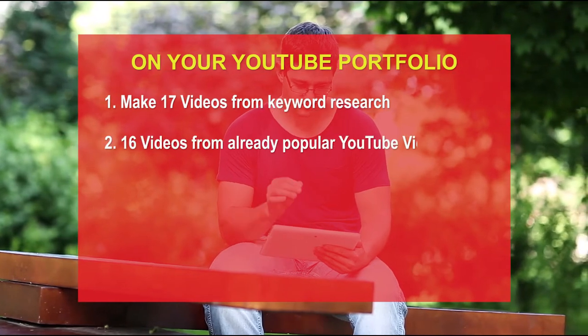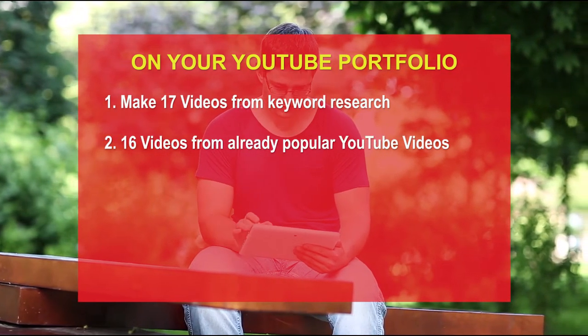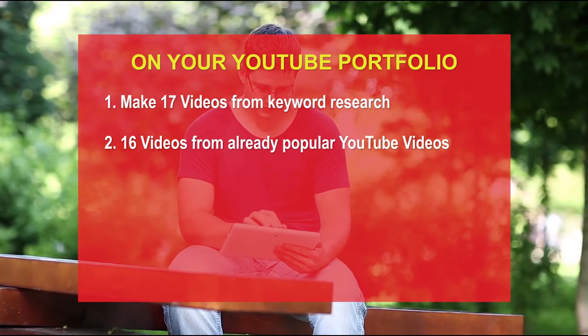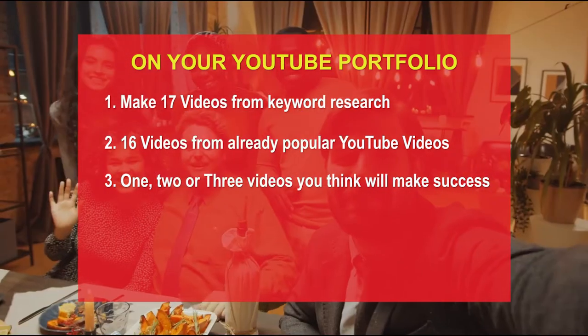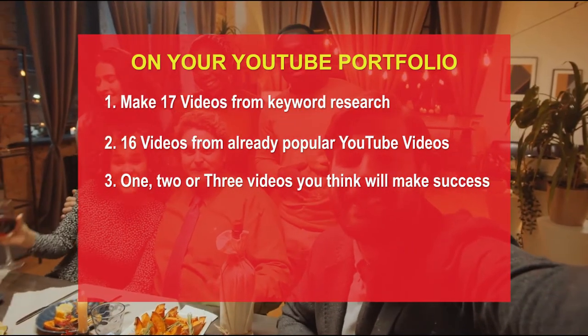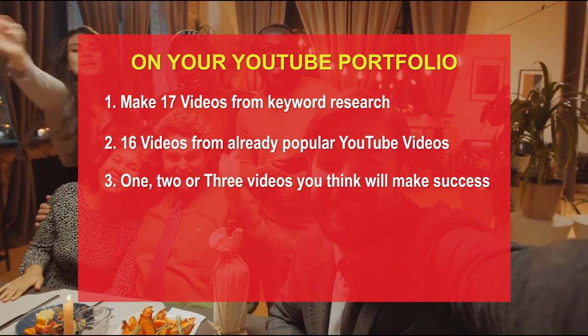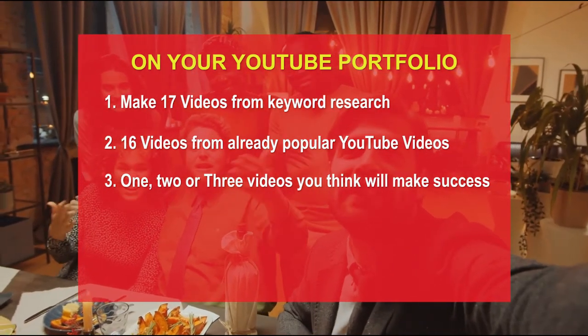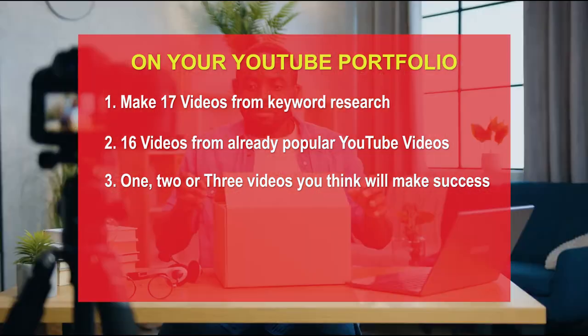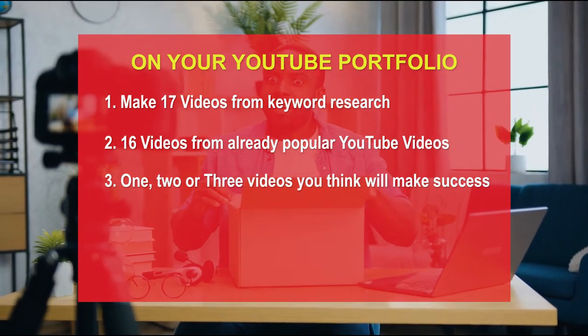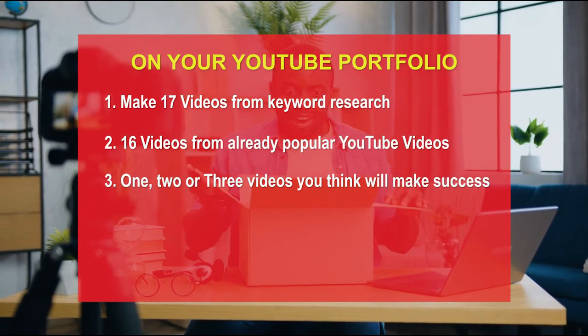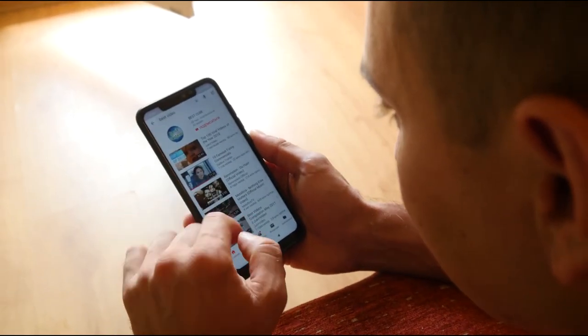So on your portfolio, do 17 videos from keyword research, 16 videos from already popular videos used as inspiration, and I'd also recommend doing one, two, or three videos that you think could possibly succeed — videos on topics that haven't been created by anyone in your niche, no trending videos on that topic. Take a shot at it; you might be surprised where it takes you. You need to treat your YouTube videos as an investment and put all seriousness into creating them — that's why we're giving you all the necessary steps to have a successful paying YouTube channel.